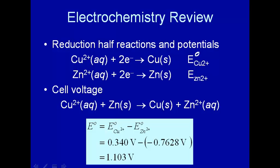Each one of these has what's known as a standard reduction potential: E° for Cu²⁺ and Zn²⁺. In order to calculate the cell voltage you take the standard reduction potential for the species that's being reduced—copper is being reduced—and subtract off from that the reduction potential.